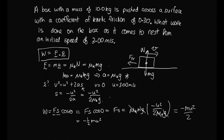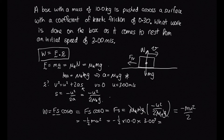Now we have the equation, let's substitute in the values. We get minus one-half times 10 times 3 squared, which gives minus 45.0 joules. It's a scalar so we don't need to give a direction. The negative sign indicates that this is energy lost, not energy gained.